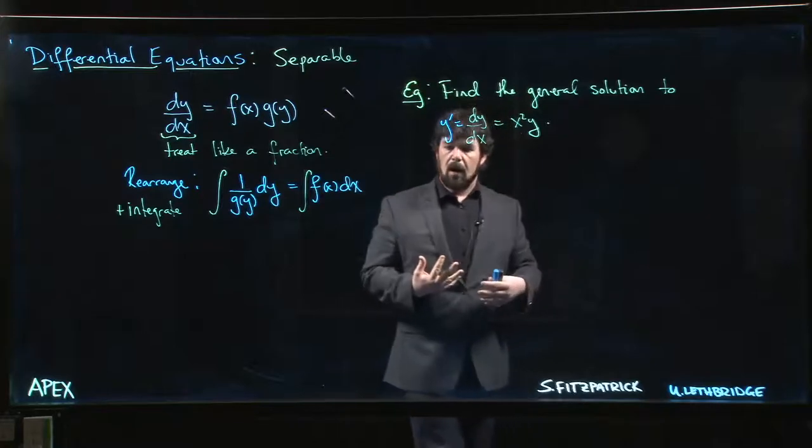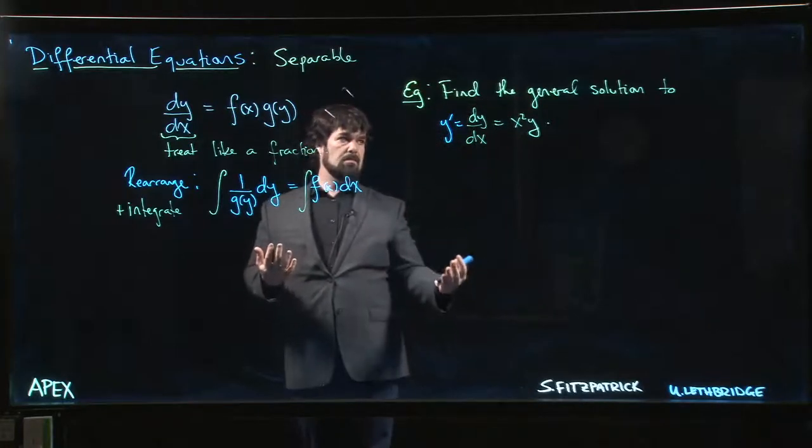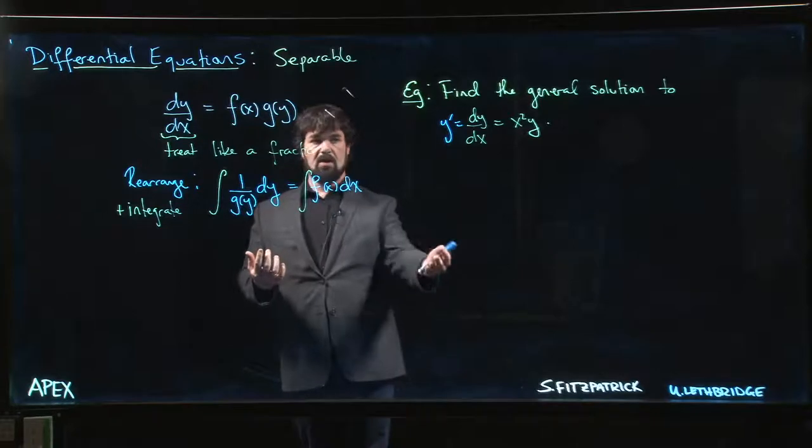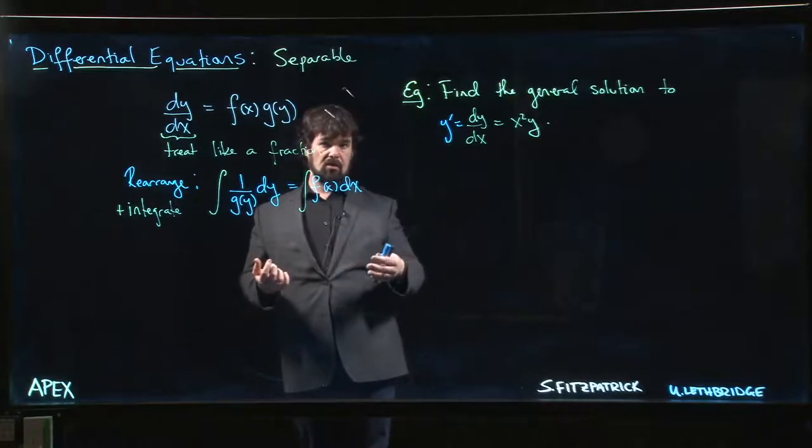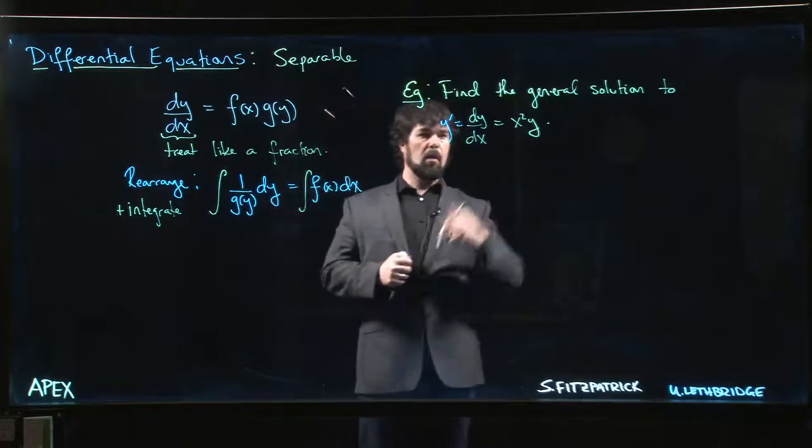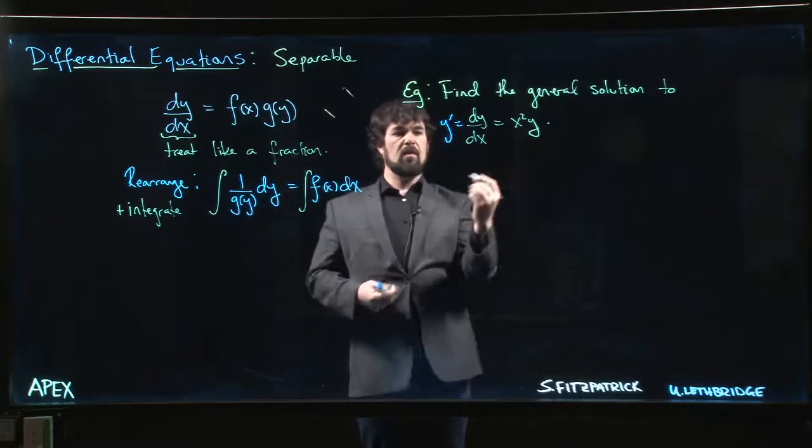So those trivial solutions maybe they don't fit the family that you come up with at the end when you write down the general solution, so you want to make sure that those are accounted for. But we'll have a look and see what happens in this example. So the first thing we do is we separate.